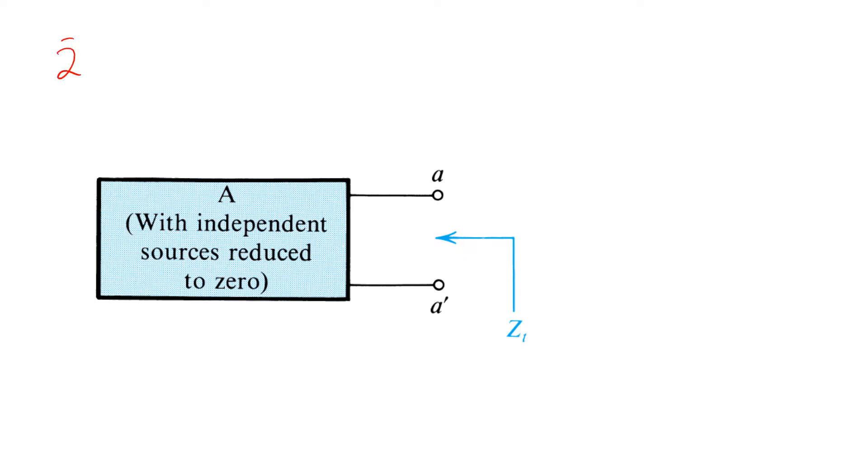Step two is to find Zt. We do so by setting all independent sources inside A to zero. Independent sources include voltage sources and current sources.